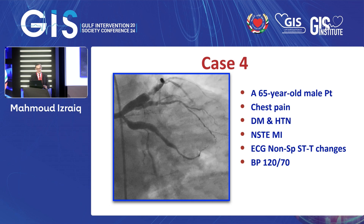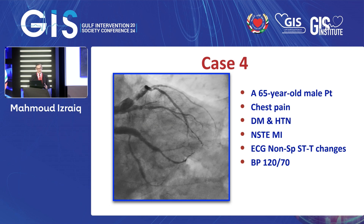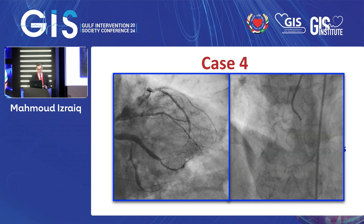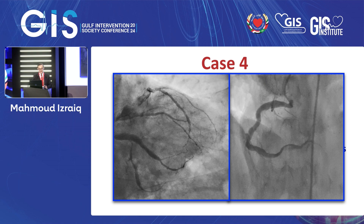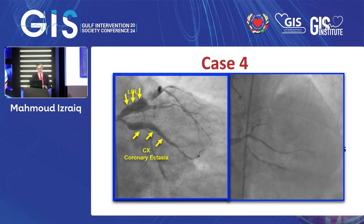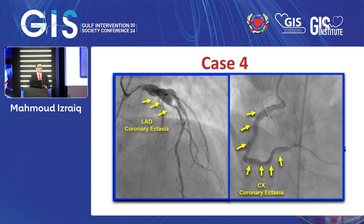This is a 65-year-old male who presented with chest pain, diabetic, hypertensive, non-ST elevation MI. This is Type 1 coronary ectasia — you can see involvement of the circumflex and LAD, with a clot in the LAD. We tried glycoprotein IIb/IIIa inhibitor with heparin and clopidogrel for two days, but the clot and pain persisted. With a team approach, we decided to proceed with surgery — this was a surgical case.